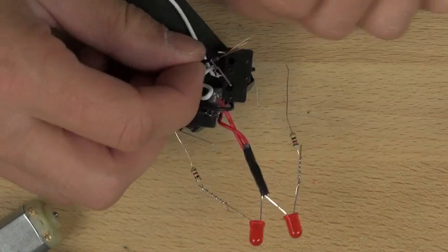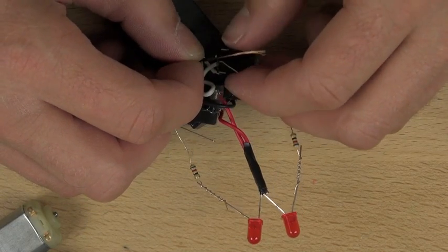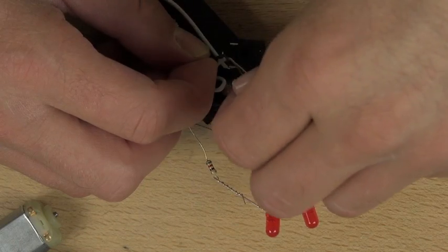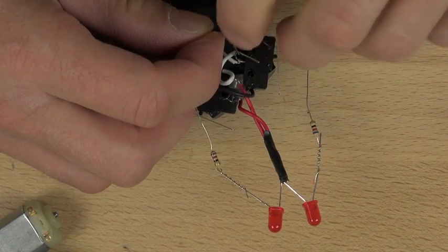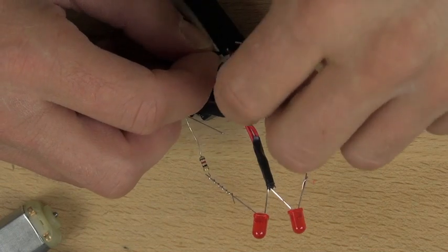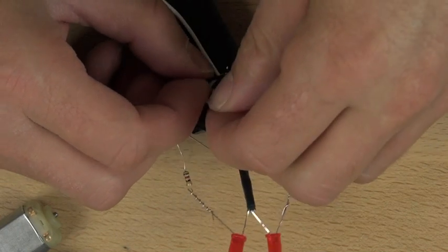So we're going to take those strands and we are going to wrap them around our twisted together wires. And that's going to allow us to connect the negative side of our battery to our switches and begin to build the rest of the circuit that we need to make the bot work.